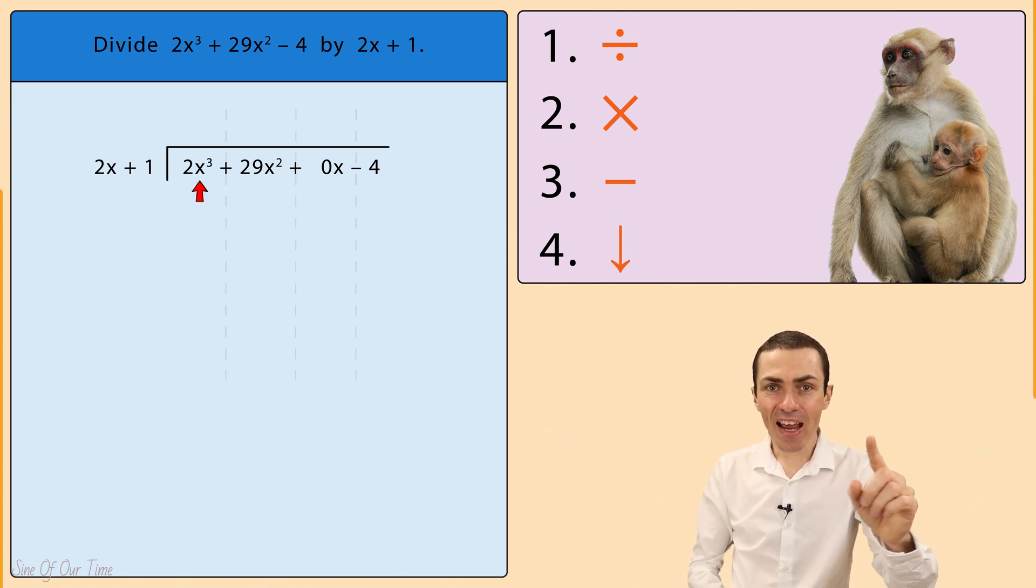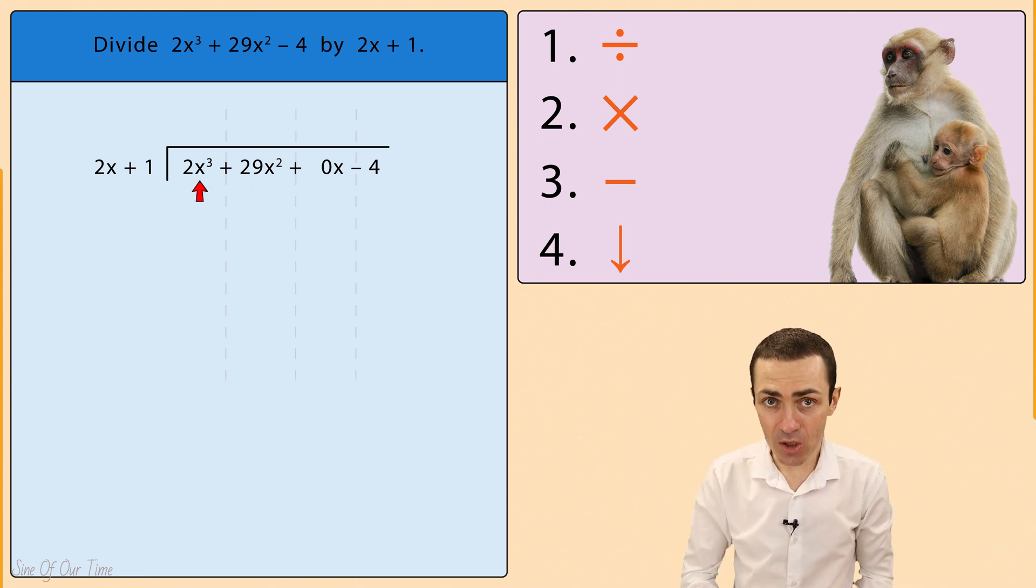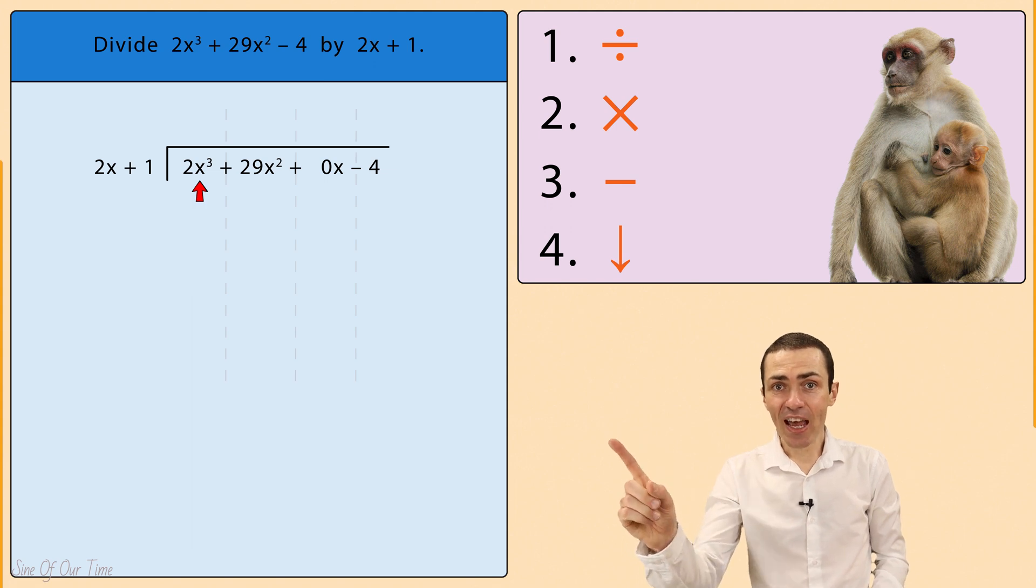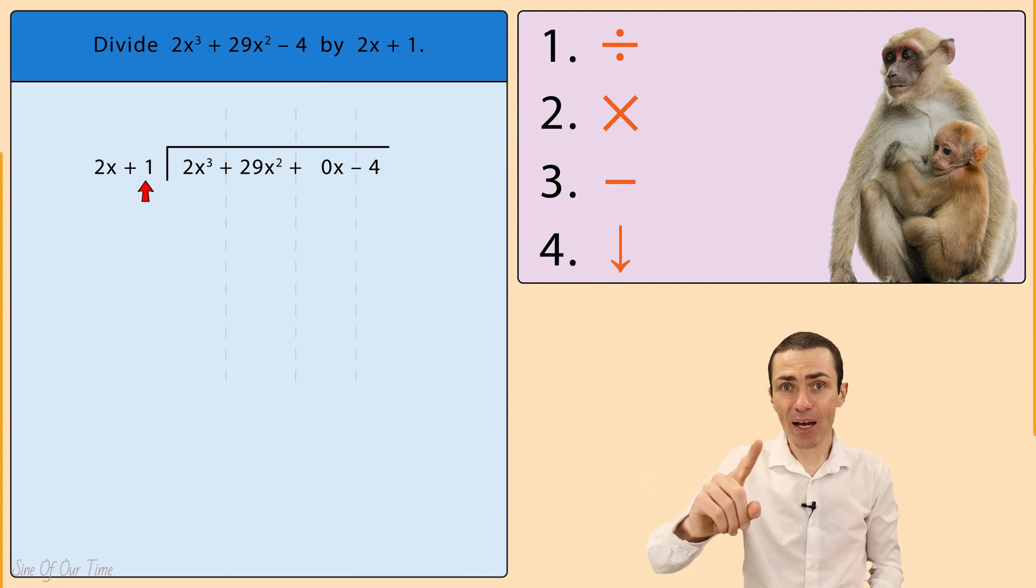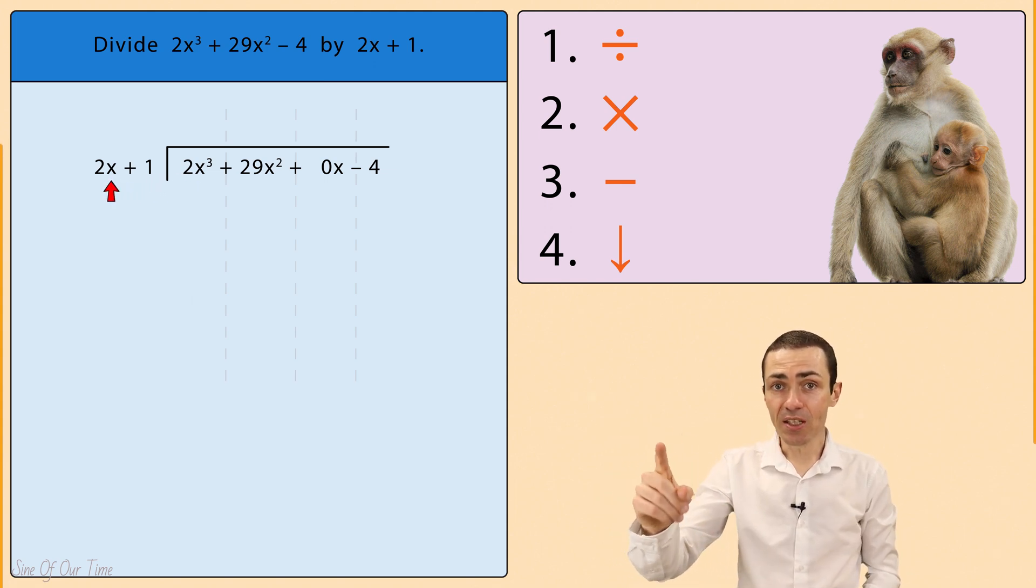Now we scan the dividend to find its highest power of x, which turns out to be 2x cubed, and then we scan the divisor for its highest power of x, which turns out to be 2x.